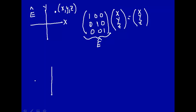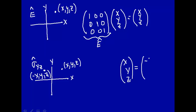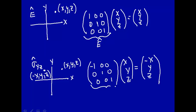Finally, we do a sigma-YZ operation. Here are the X, Y, Z axes, and here's our point X, Y, Z. When we reflect in the YZ plane, the point becomes minus X, Y, and Z — Y doesn't change, Z doesn't change, but X goes to minus X. So the matrix to do that has minus 1 on the first diagonal position, 1 on the second, and 1 on the third. This is the matrix representation of the sigma-V prime operator in the YZ plane.